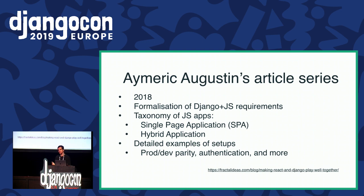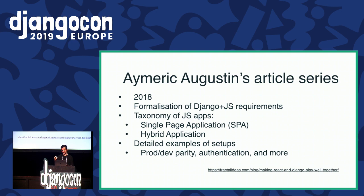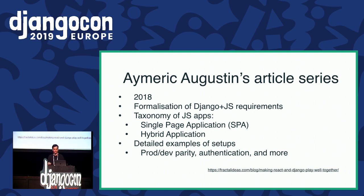Something else I want to mention is Emrick Augustin's blog article series from last year, because they really helped me formulate a lot of what I've been thinking about. His blog article series is a formalization of the requirements for building a Django JavaScript application, so it's very much linked to what I'm talking about. The main thing I remembered from this is his taxonomy of JS applications: basically two kinds of architecture — single page applications and hybrid applications. In his blogs he also talks about production and development parity, authentication, CSRF, etc. I really recommend going there if you're working on Django and JavaScript.